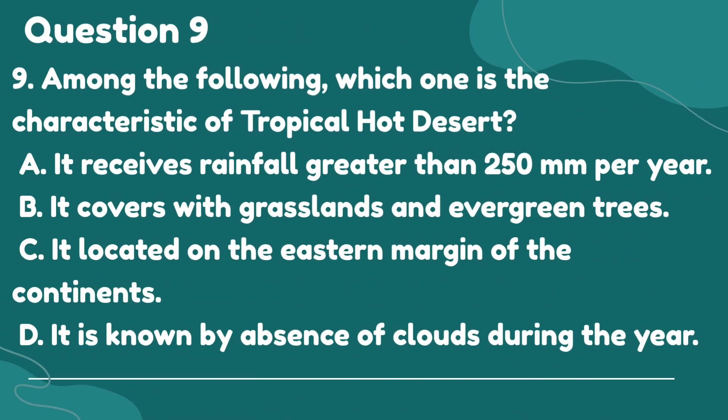Question 9. Among the following, which one is a characteristic of a tropical hot desert? A. It receives rainfall greater than 250 millimeters per year. B. It is covered with grasslands and evergreen trees. C. It is located on the eastern margin of the continents. D. It is known by the absence of clouds during the year.